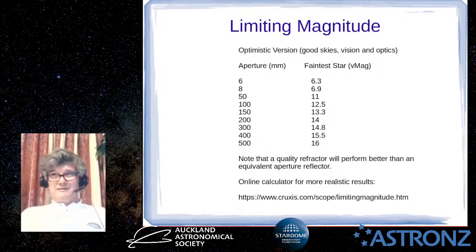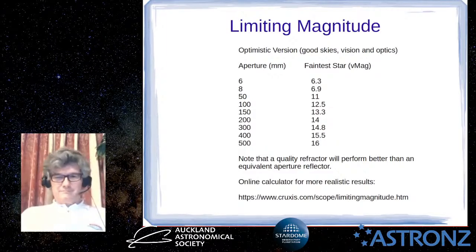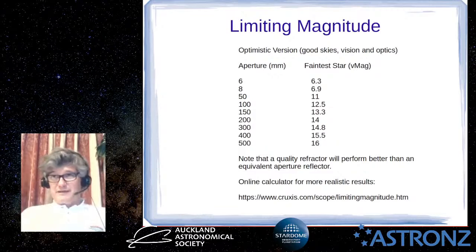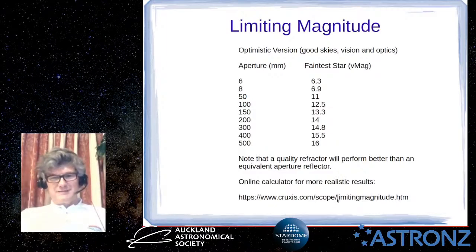For more accurate limiting magnitude results I recommend the site www.cruxis.com/scope/limitingmagnitude. It's a calculator where you enter your telescope size and type, sky conditions, your age, and even how dirty your optics are — it shows the effect of each factor on how faint you can go.